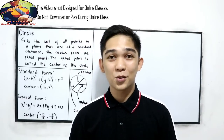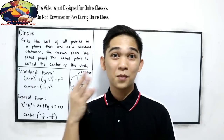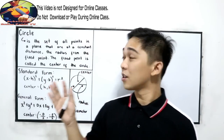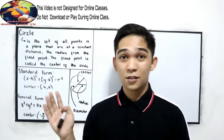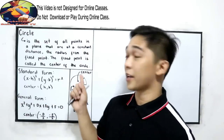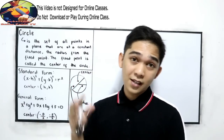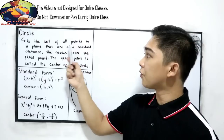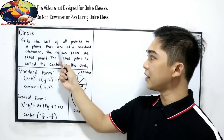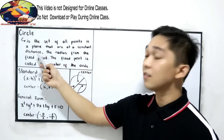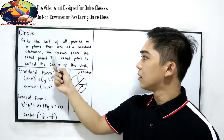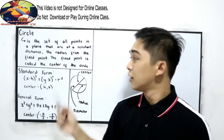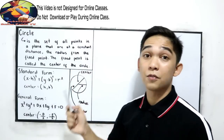Hello everyone, welcome to Senior Pablo TV. Today we will be discussing the circle — your pre-collections first lesson, or Module One: The Circle. First, let us define what a circle is. A circle is the set of all points in a plane that are at a constant distance — the radius — from a fixed point. The fixed point is called the center of the circle.